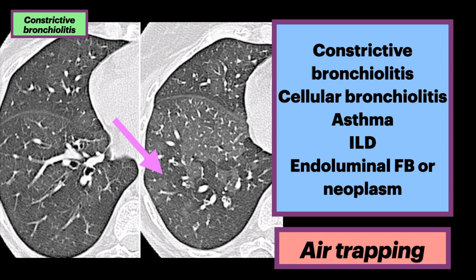Second is cellular bronchiolitis, which manifests as tree-in-bud nodules and mosaic attenuation. This can be infection, aspiration, respiratory bronchiolitis, follicular bronchiolitis, or panbronchiolitis. Asthma, interstitial lung disease, and endoluminal foreign body or neoplasm can also cause air trapping.